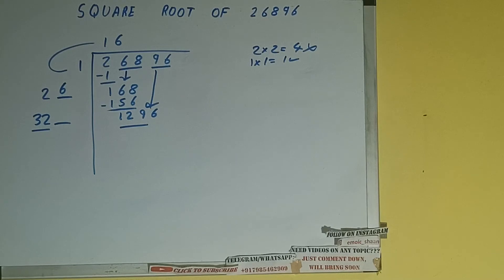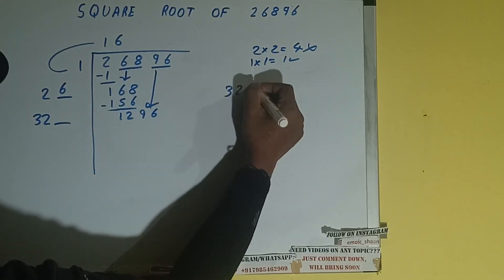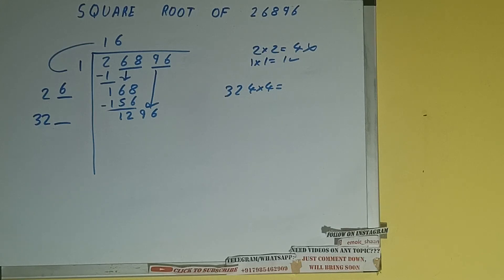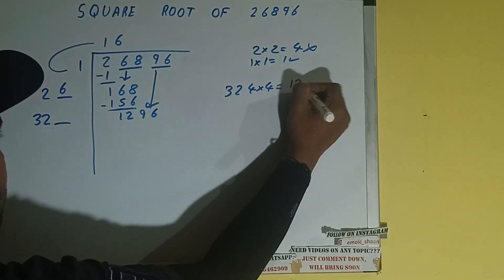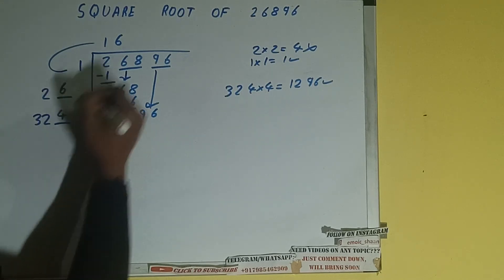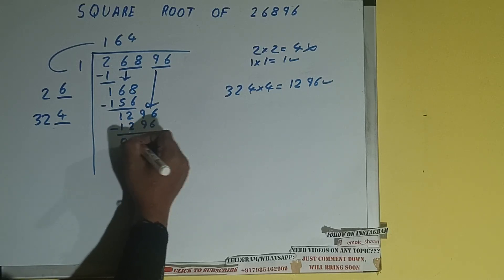So 32 four times is 128, so we can try 4 times. 324 into 4 we can try, and it will give 1296, which is good to take. So 4 here and 4 here.